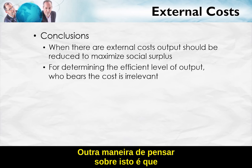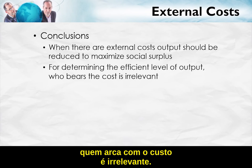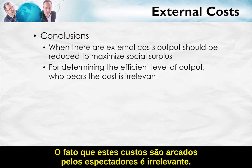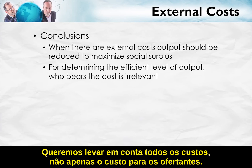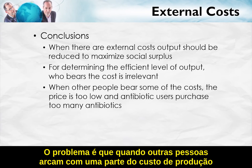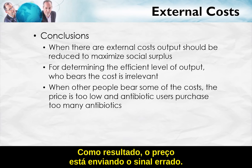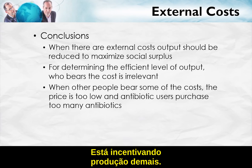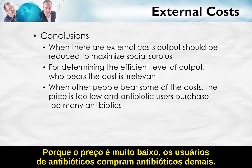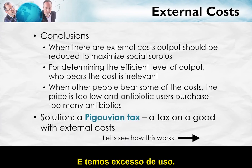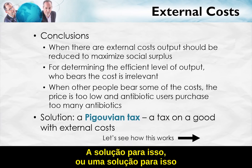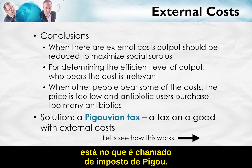When there are external costs, output should be reduced to maximize social surplus. For determining the efficient level of output, who bears the cost is irrelevant — we want to take into account all costs, not just the cost to the suppliers. When other people bear some of the costs of production, the price is too low. Not all of the costs are reflected in the price, so the price sends the wrong signal — it incentivizes too much production, and antibiotic users purchase too many antibiotics, resulting in overuse.